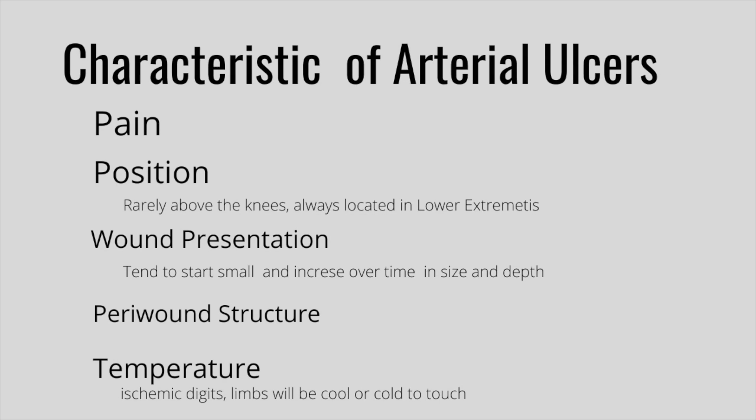Let's talk about the characteristics of arterial ulcers. These include pain, position, presentation, peri-wound, pulses, and temperature. Many patients report significant pain in their legs. The pain tends to increase with activity and elevation, and it can sometimes be masked by diabetic neuropathy. The pain is almost always below the knee — most commonly at the toes, the malleolus (ankle), and the anterior leg.